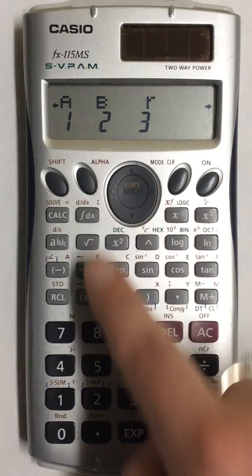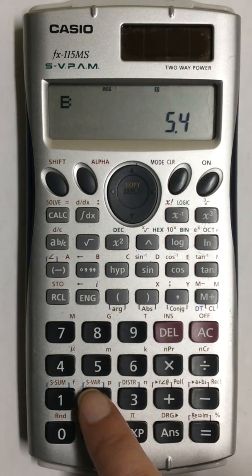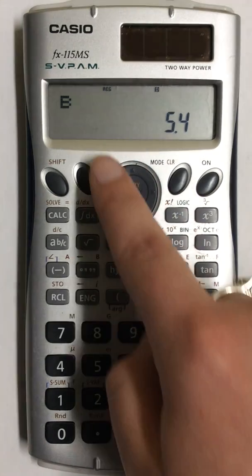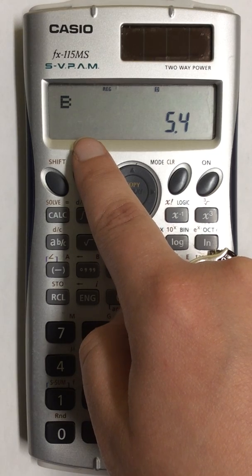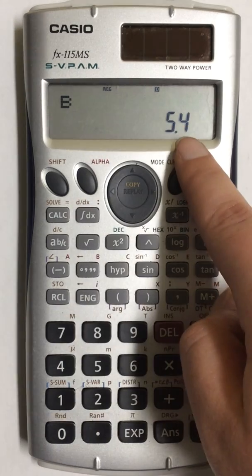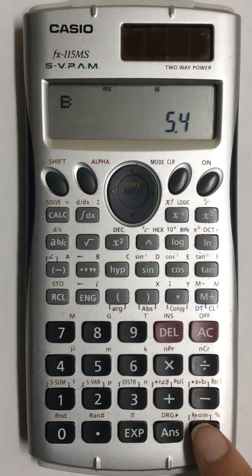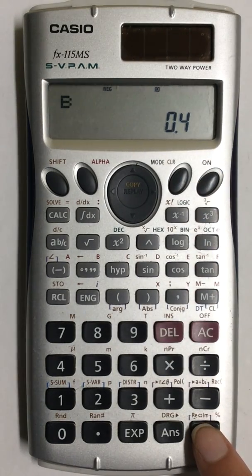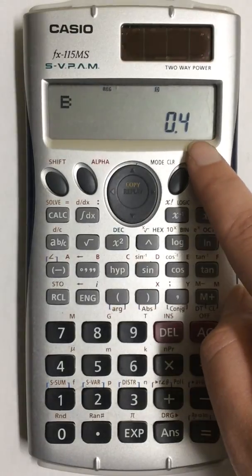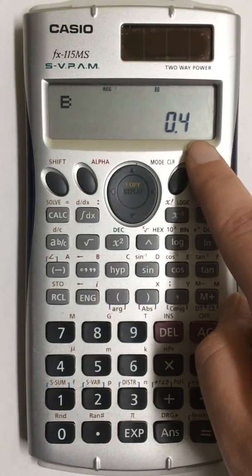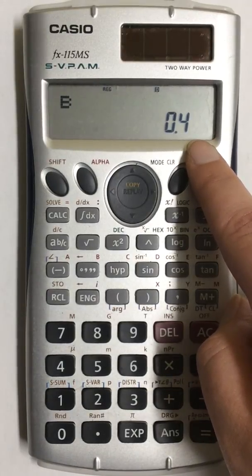Now I'm going to press number two and because the cursor is blinking you still have to press equals. The value on the screen is not your slope. So I'm going to press equals and now my slope value shows on the screen and again be careful about where you need to round to.